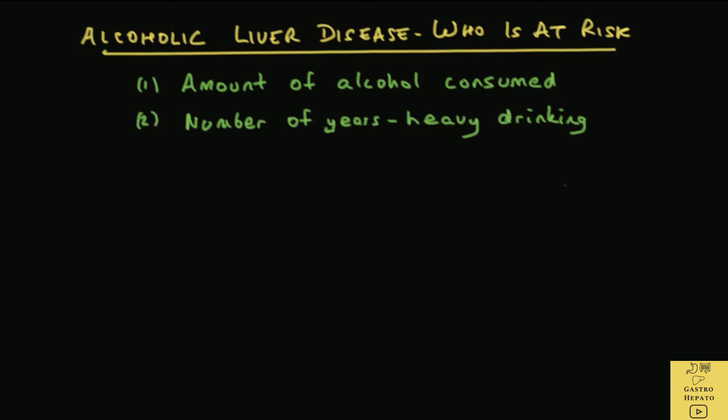Number of years of heavy drinking is another factor. Alcoholic liver disease usually occurs after years of heavy drinking. Some people develop cirrhosis after 5 to 10 years, while in others it occurs after 20 to 30 years.